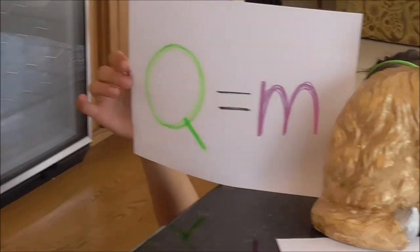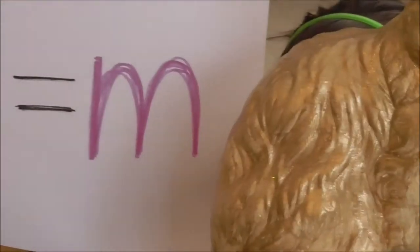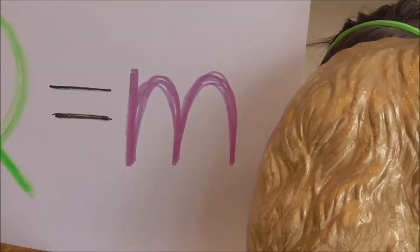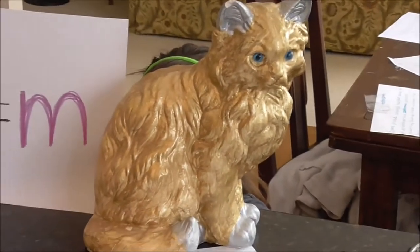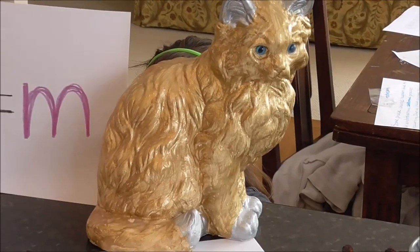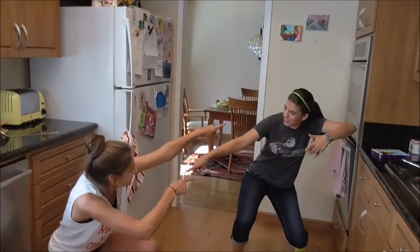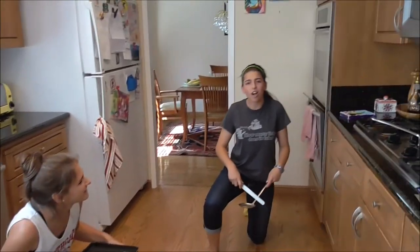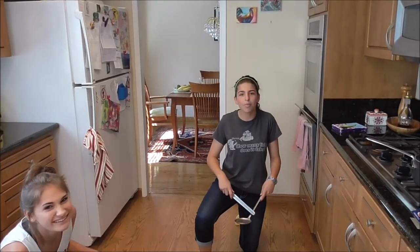Q is the amount of heat gained or lost. M is the mass of your substance. C is the specific heat. And T is the temperature change. Cool! But I don't fully understand. Hey Thomas, can you show us an example problem?